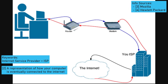To start, let's make a distinction between the internet and the World Wide Web. The internet is a global computer infrastructure that transmits information between interconnected devices, sort of like the roads and railways between cities.